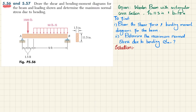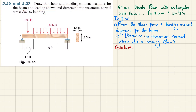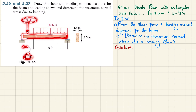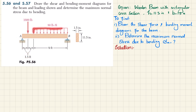Welcome back. Problem 5.56 — draw the shear and bending moment diagrams for the beam and loading shown, and determine the maximum normal stress due to bending. This is a simply supported beam A-B with a point load of 1600 pounds located 1.5 feet from point A, and a distributed load of 80 lb/ft acting over a length of 9 feet. The cross-section is rectangular with breadth 1.5 inch and height 11.5 inch.